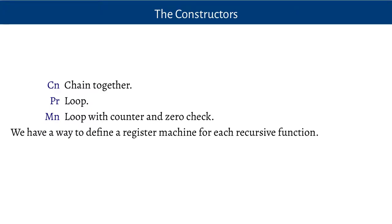So we're done. We have shown that we can define a register machine for absolutely every recursive function. We've got the basic register machines for the basic recursive functions, and then we've got ways of combining register machines using composition, primitive recursion, and minimization. So every recursive function can be calculated by a register machine. All we need to do is show this in reverse — that any register machine computes a recursive function — and that is a very different kettle of fish.